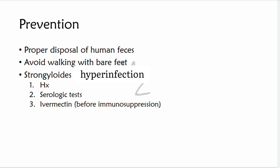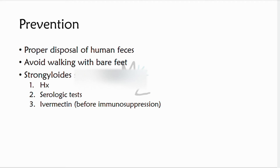Prevention involves disposing of sewage properly and wearing shoes. To prevent Strongyloides hyperinfection in patients scheduled to receive immunosuppressive drugs — such as corticosteroids or TNF inhibitors — who have lived in an area of Strongyloides endemicity, serologic tests to determine whether antibodies to Strongyloides are present should be performed. If antibodies are found, the patient should be treated with Ivermectin before immunosuppression is undertaken, if possible.